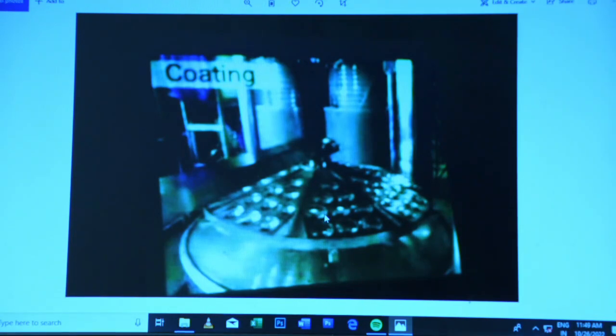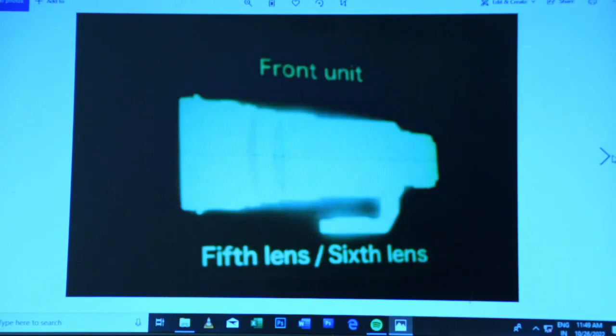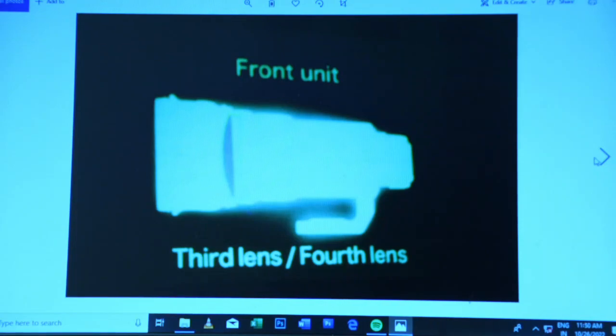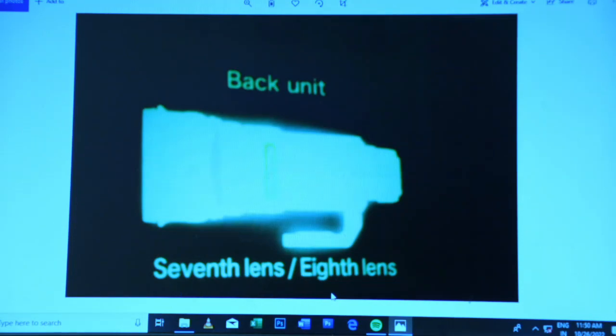Here is a clear cut. Here is a small element. 6th lens, front unit, 3rd lens, 4th lens, 1st lens, 2nd lens, 7th lens, 8th lens.